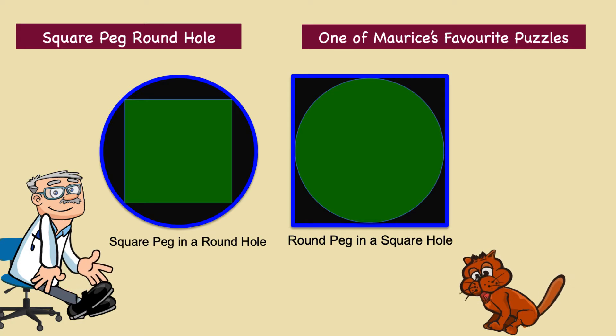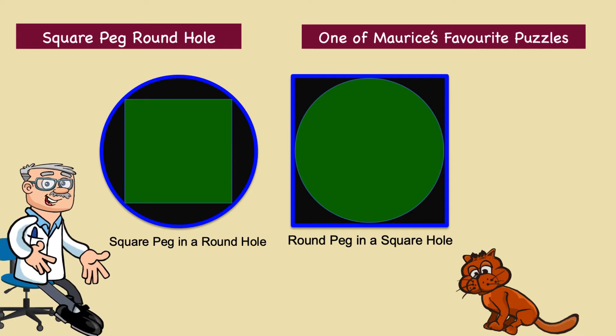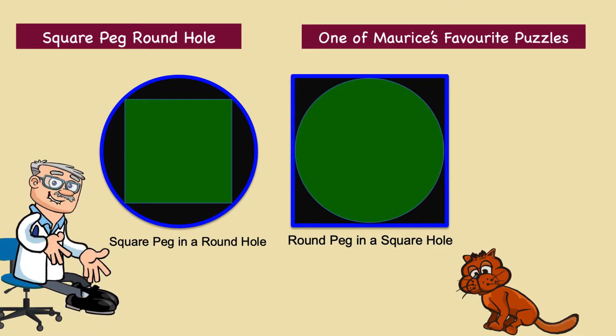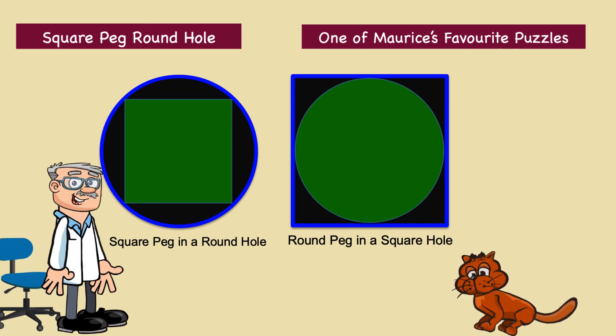My not-very-bright assistant will explain further. Thank you, Morris. Although I think you have summed up the puzzle completely. What is the tightest fit? A square peg in a round hole, or a round peg in a square hole?